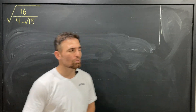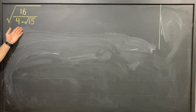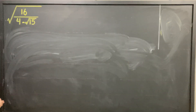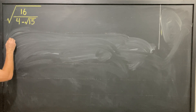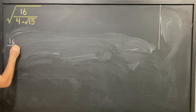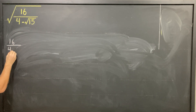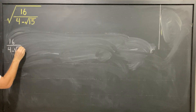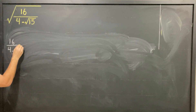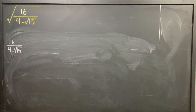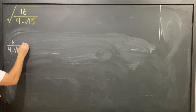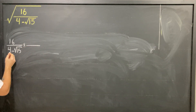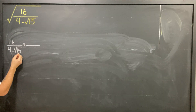To solve this, I'm going to start with the inner part: 16 over (4 minus square root of 15). Let me rewrite it, then multiply both top and bottom by the conjugate of the denominator. The conjugate of 4 minus square root of 15 is 4 plus square root of 15.